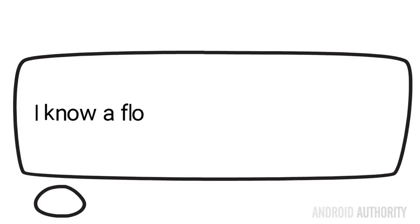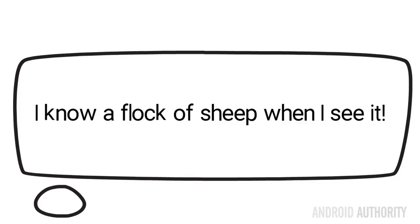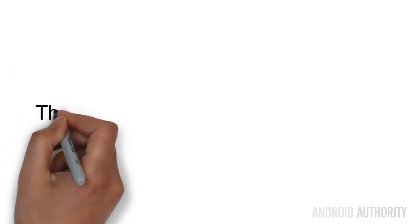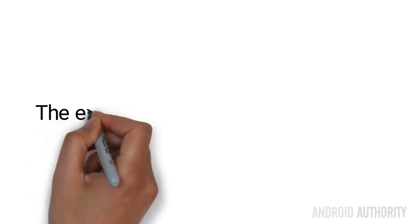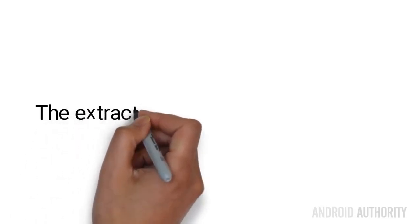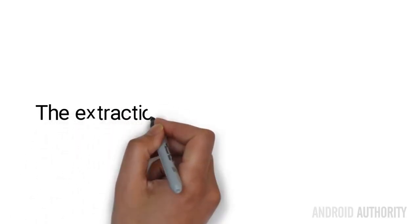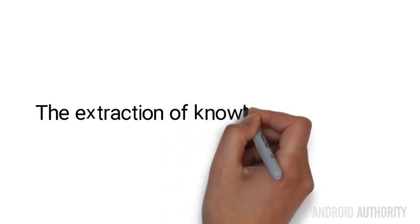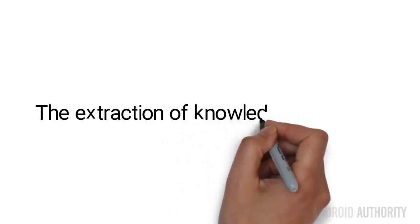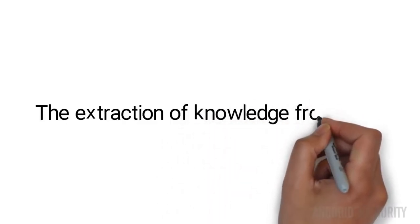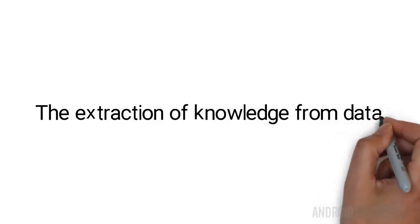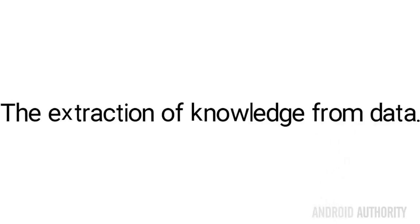For example, given a set of characteristics about a house, how much is it worth based on previous house sales? This leads us to another definition of machine learning: it is the extraction of knowledge from data. You have a question you are trying to answer, and you think the answer is in the data. That is why machine learning is related to statistical analysis and data mining.